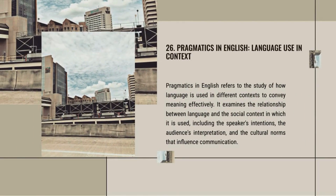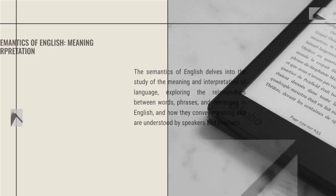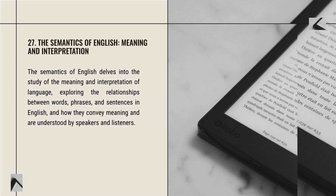Pragmatics in English refers to the study of how language is used in different contexts to convey meaning effectively. It examines the relationship between language and the social context in which it is used, including the speaker's intentions, the audience's interpretation, and the cultural norms that influence communication. For example, the same English word or phrase may have different meanings or connotations in different parts of the world, and the appropriate level of formality can vary depending on the setting.